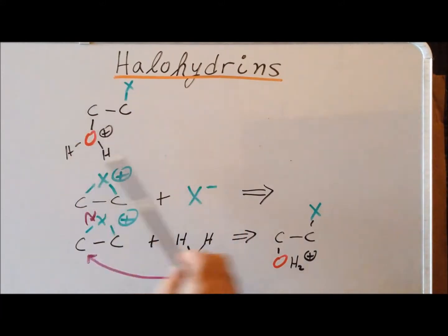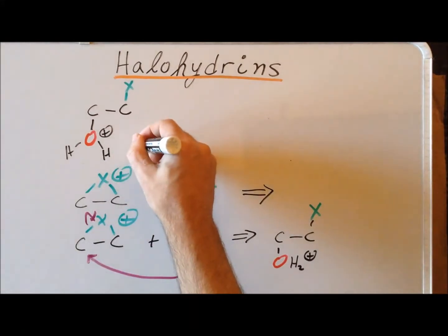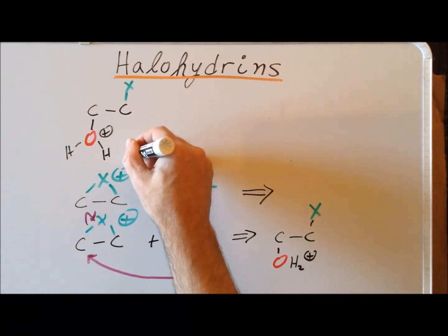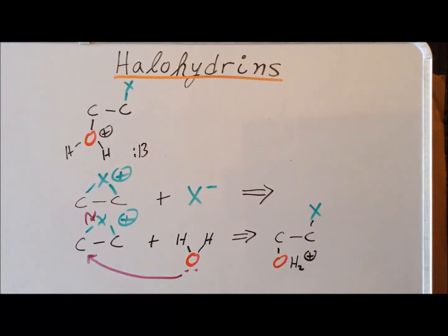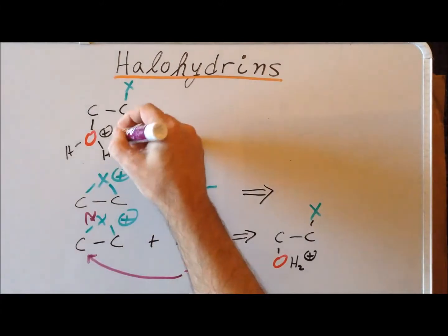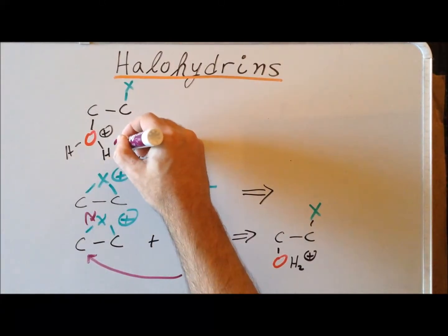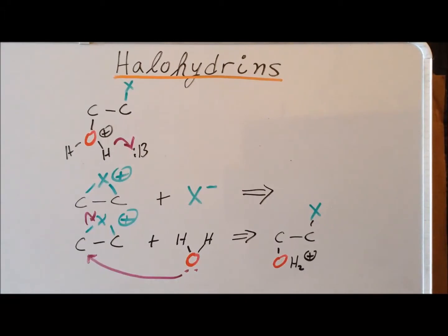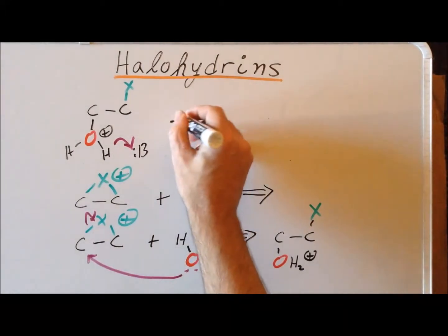Once we have the protonated alcohol, it reacts with the base, which is probably going to be just the water solvent. And this is going to abstract a proton and leaves us with our product, the halohydrin.